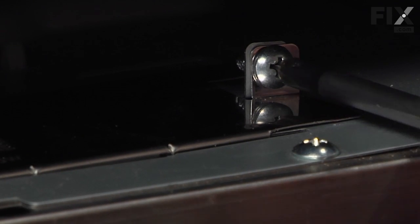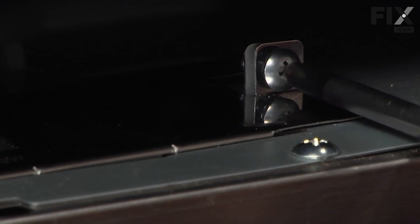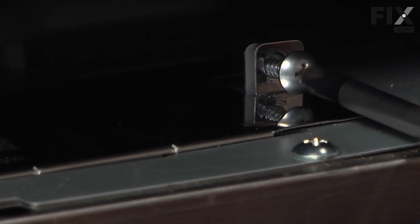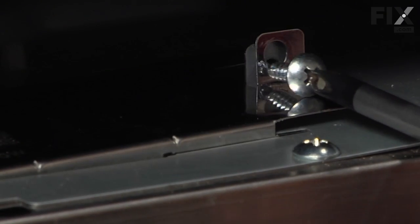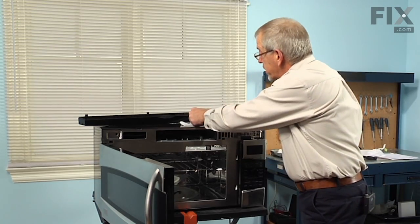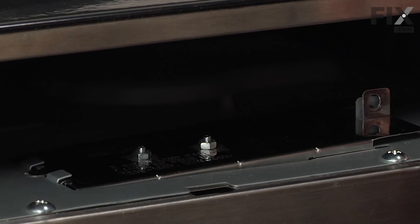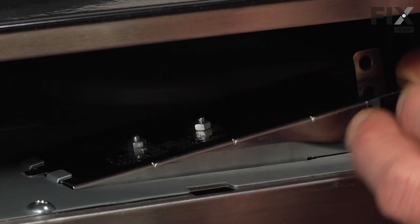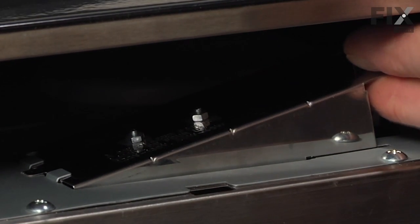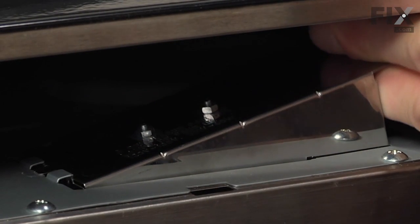Next, there is a single Phillips screw that holds the light socket holder. Remove that screw and lift up on the right end of that holder, then pull it to the right.